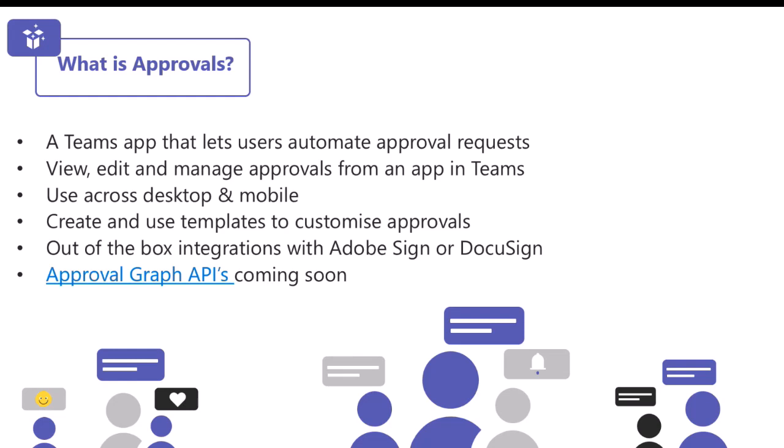There are some out-of-the-box integrations with e-signature applications, things like Adobe Sign and DocuSign. If you use either of those, they are available out of the box to utilize with the Microsoft Approvals application. And there are also some really exciting graph APIs coming soon, so you can start to integrate them with some line of business applications within your organization.